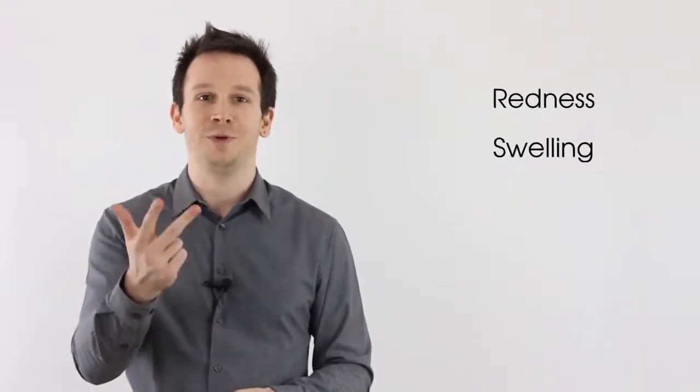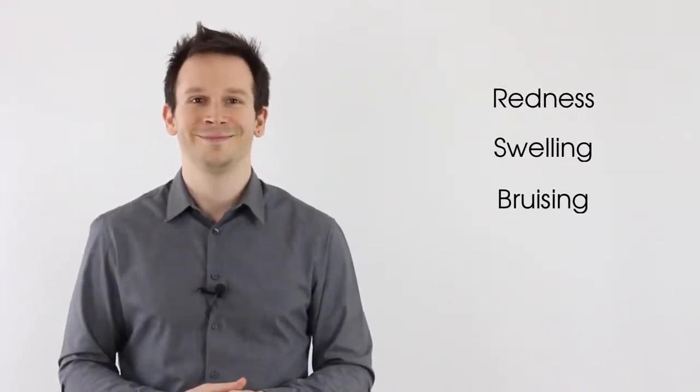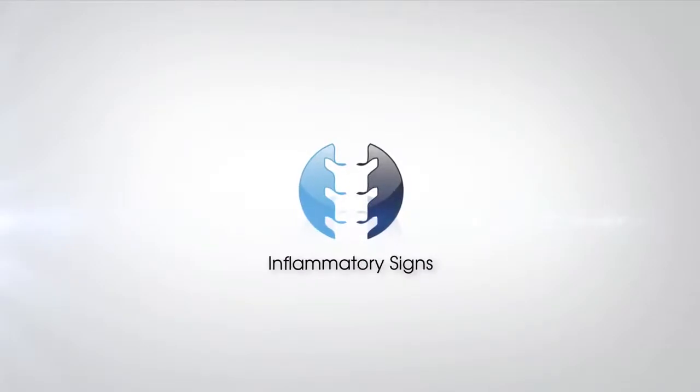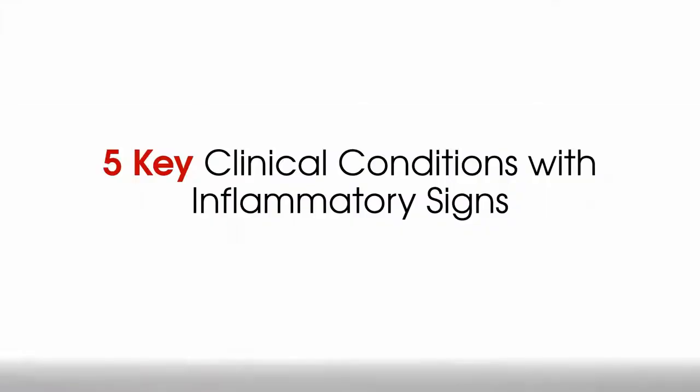When thinking about specific shoulder observation there's something we have to do first: look for key inflammatory signs and bony deformity, because it doesn't matter what joint we're looking at, we need to look for those things. Your key inflammatory signs are redness, swelling and bruising. There are five key presentations in which you are highly likely to find inflammatory signs that every good clinician should be aware of.